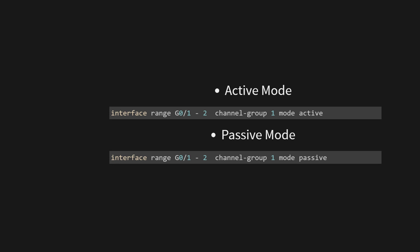The interface range command sets the range of interfaces — GigabitEthernet 0/1 and GigabitEthernet 0/2. Channel group 1 designates these interfaces to be bundled into a port channel interface. Mode active sets the port channel negotiation mode to active, meaning the interface actively sends LACP packets to initiate negotiation. When you execute this command, GigabitEthernet 0/1 and GigabitEthernet 0/2 are combined into port channel 1 using active mode. If the neighboring device is also in active or passive mode, the port channel will be formed, providing higher bandwidth and link redundancy.